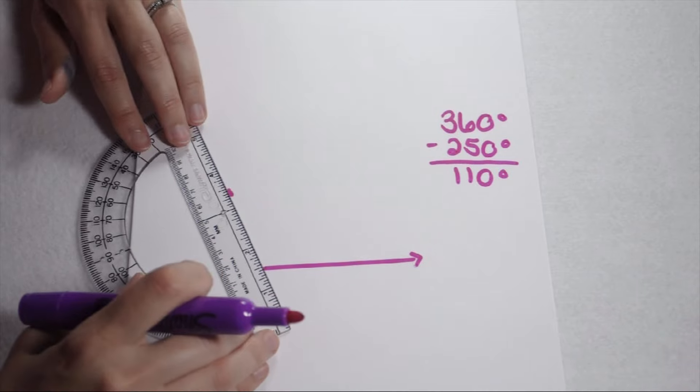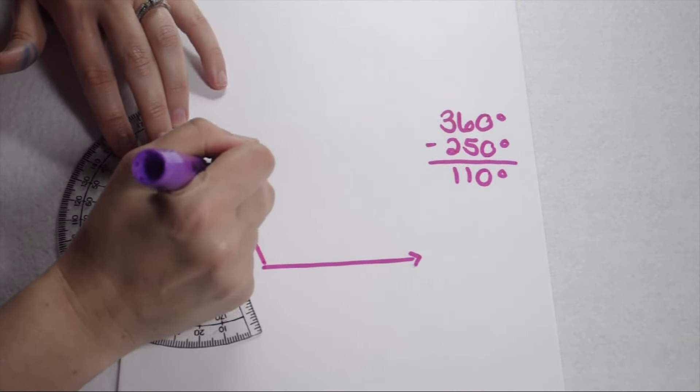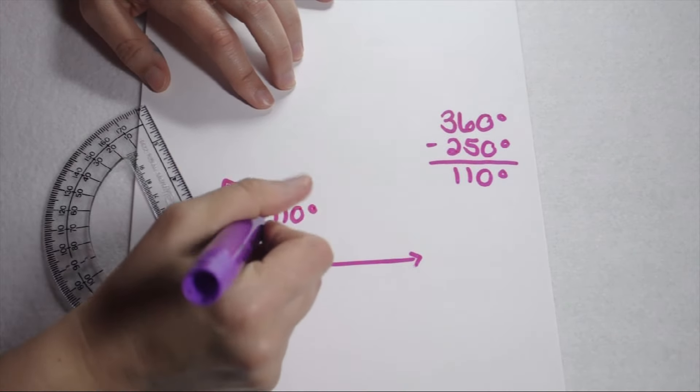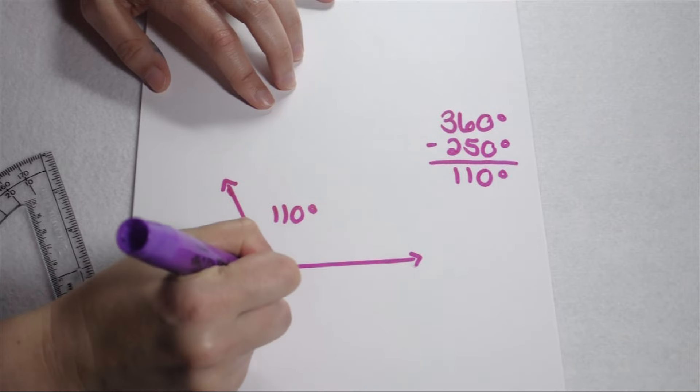Make a mark and connect that to my vertex. Now, we know this inside part is 110 degrees, but we want the reflex part out here.